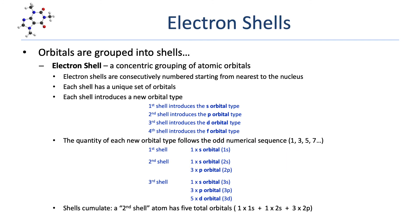Orbitals are grouped into what are called electron shells — concentric groupings of atomic orbitals. Electron shells are numbered consecutively starting from the nearest ones to the nucleus: first shell close to the nucleus, then the second shell a little further away, and so on. Each shell has its own unique set of orbitals. Each shell introduces a new orbital type: the first shell has only an S-orbital, the second shell also has P-orbitals, the third shell now has D-orbitals, and the fourth shell also has F-orbitals.